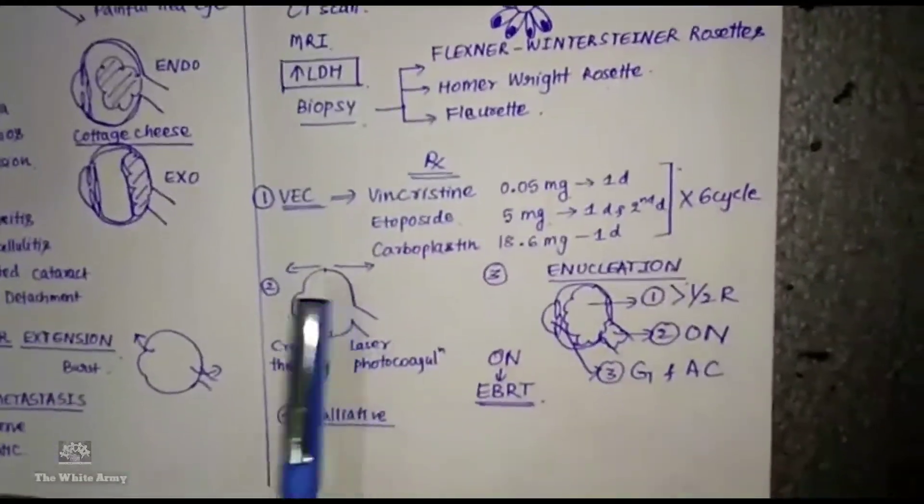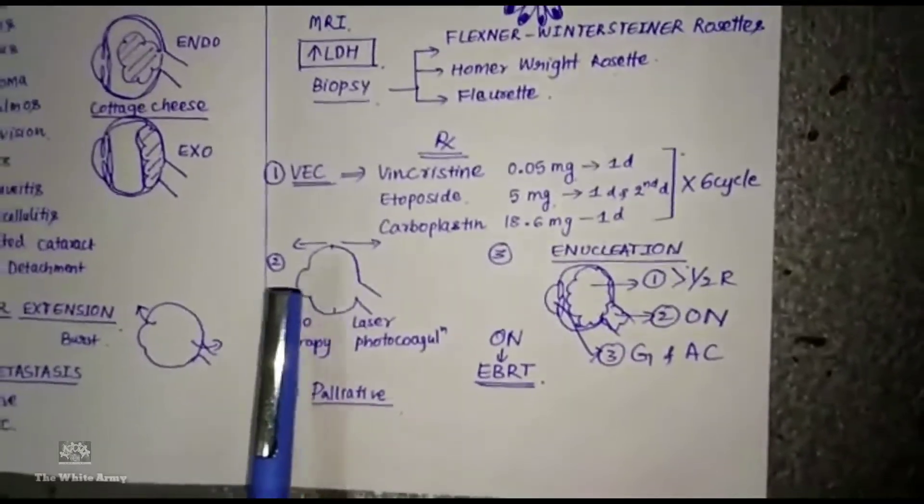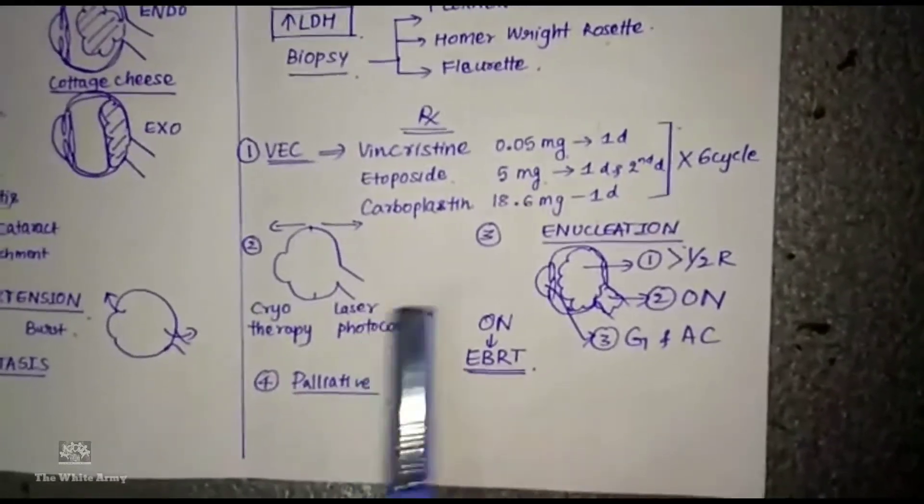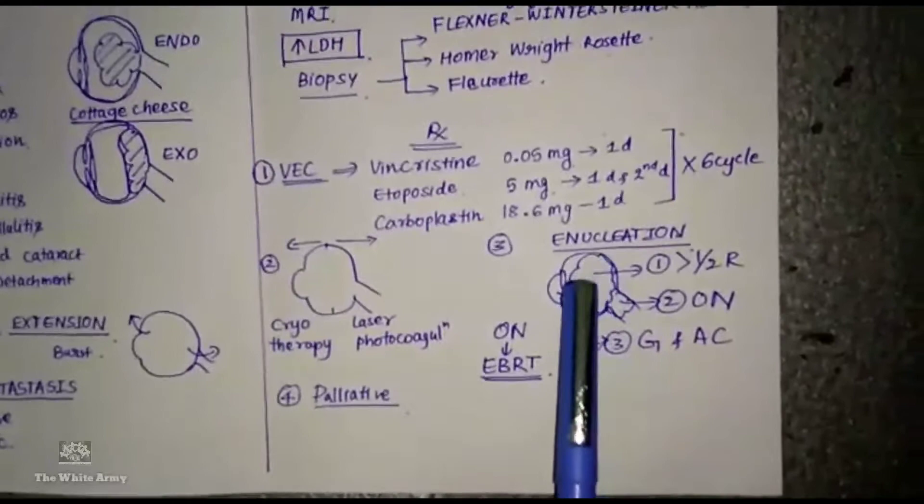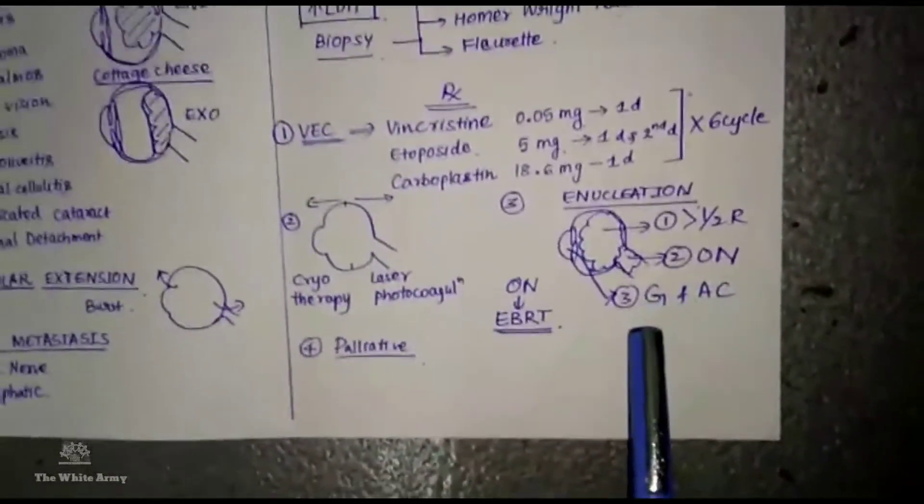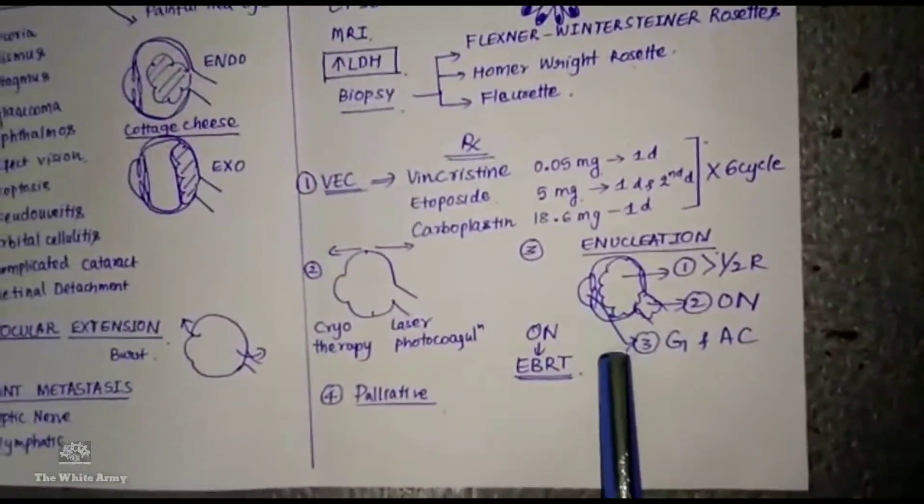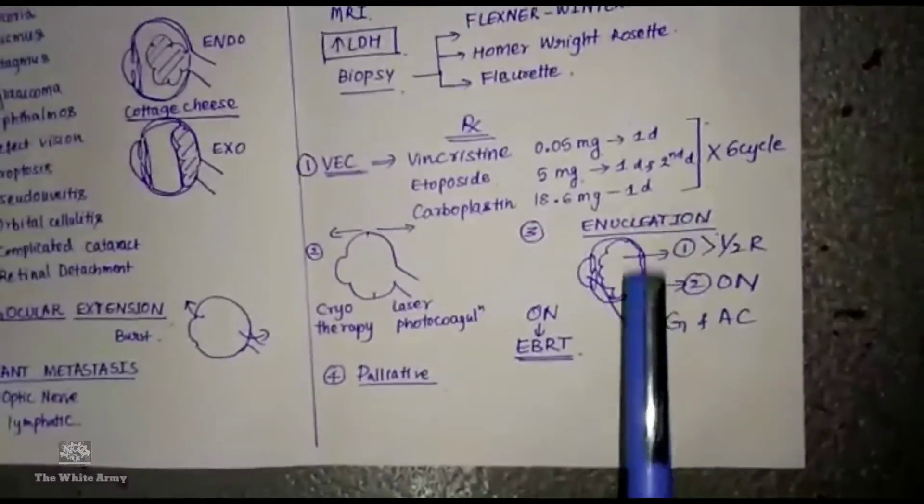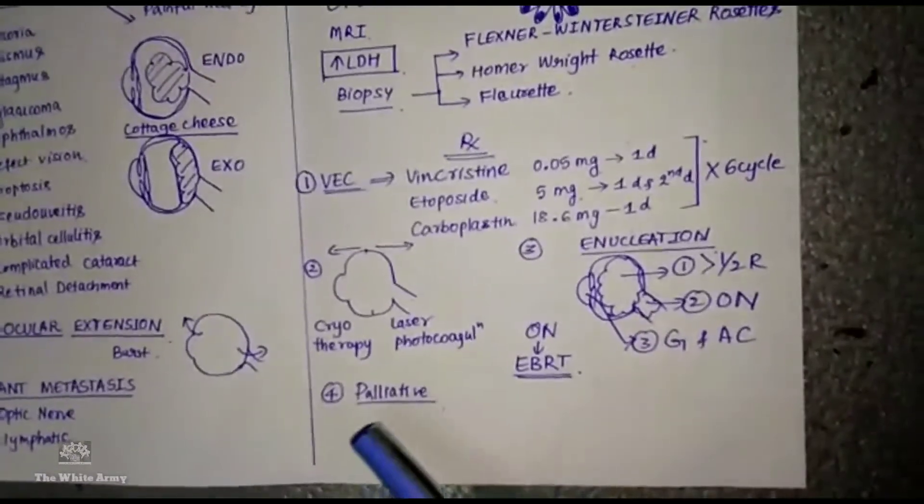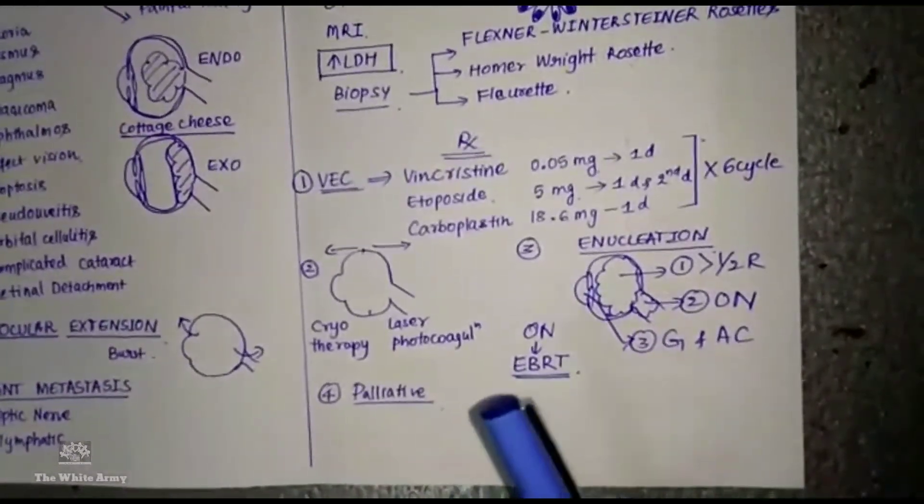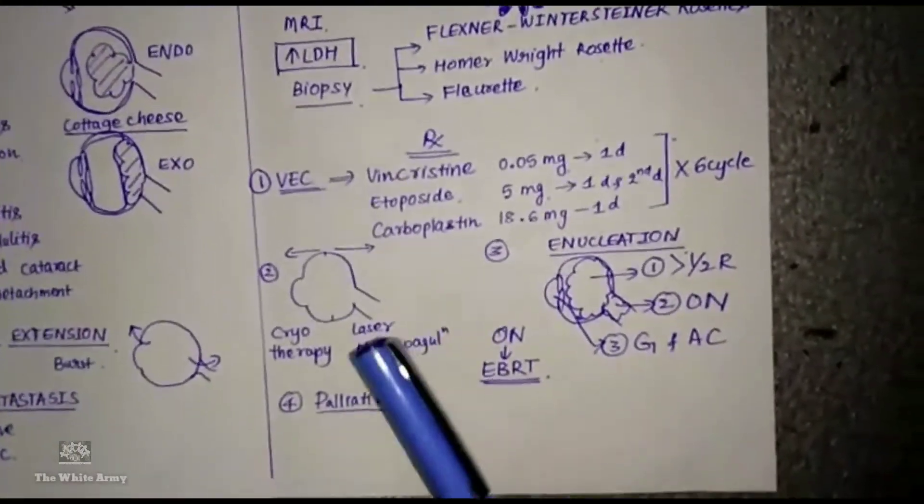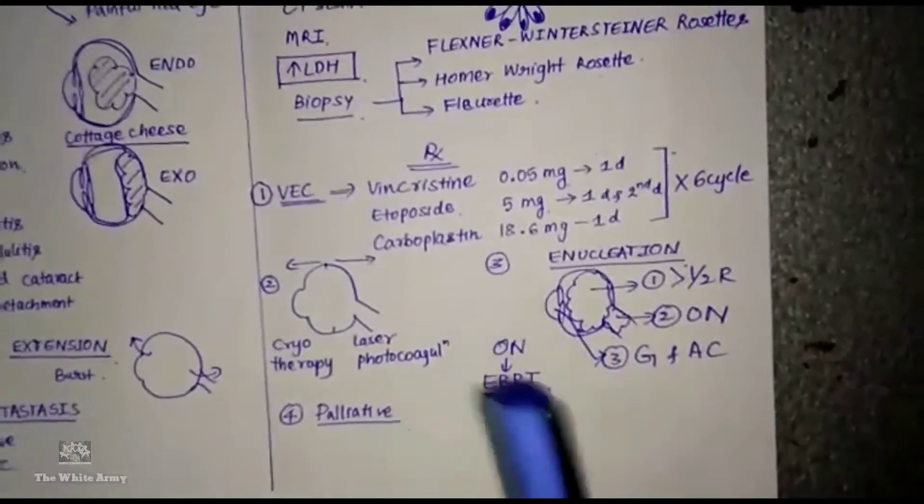Tumors present anterior to the equator you will do cryotherapy. Tumors present posterior to the equator you will do laser photocoagulation. If the tumor is involving more than half of the retina, involving the optic nerve, or involving the anterior chamber causing glaucoma, then you will go for enucleation. If the tumor is involving optic nerve, you will go for external beam radiation therapy. If the tumor is causing intraocular involvement, extraocular extension, and intracranial metastasis, then you will go for palliative therapy.